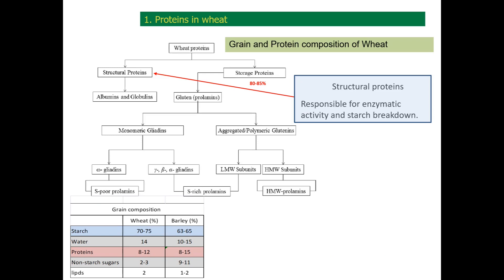Let me start this presentation with a brief introduction to the composition of cereal grains. Wheat grains mainly consist of 70% starch, 14% water, 8-12% proteins and other small constituents. Wheat proteins are classified into four types: albumins, globulins, prolamins and glutelins.